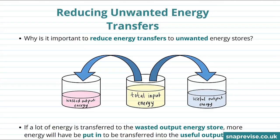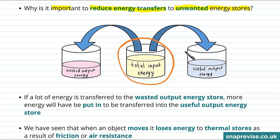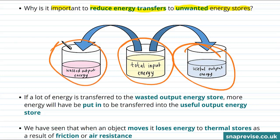It's important to try to reduce energy transfers that go into unwanted energy stores — that is, not going into the energy store that we intended. If we give a device some total input amount of energy, the idea is that we want all of our energy to go into the function of the device, which we would call useful output energy. But some energy might go towards other things that aren't the desired function, and we would say that energy has gone into the wasted output energy store.